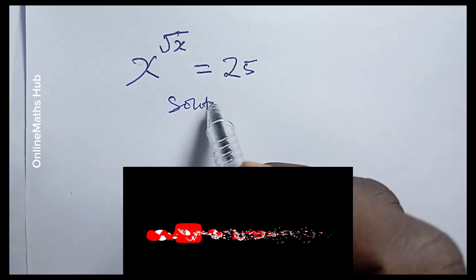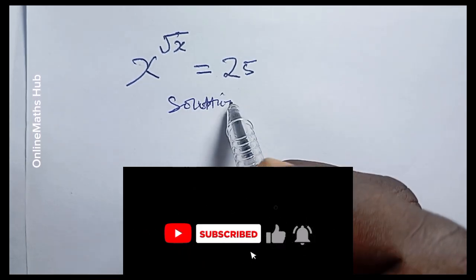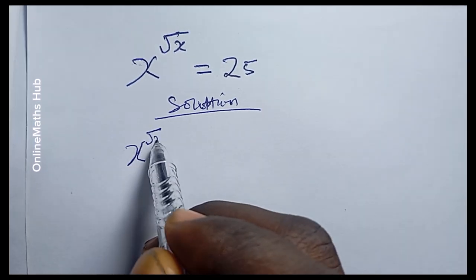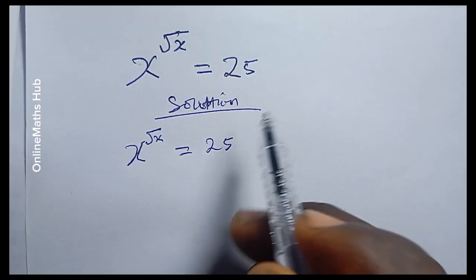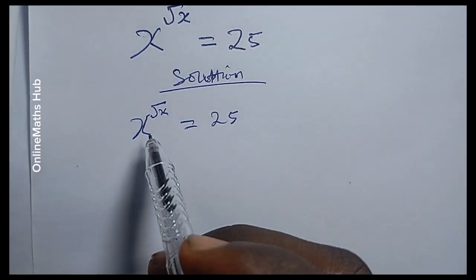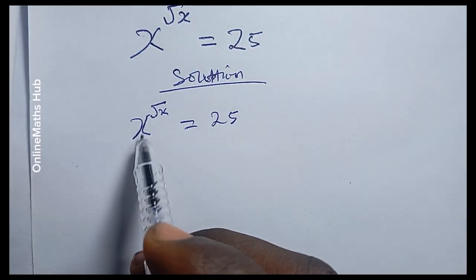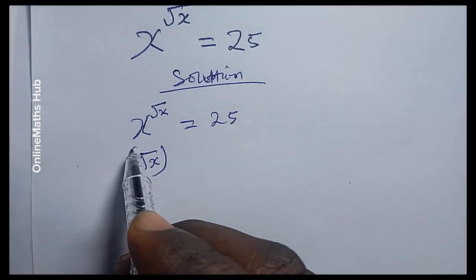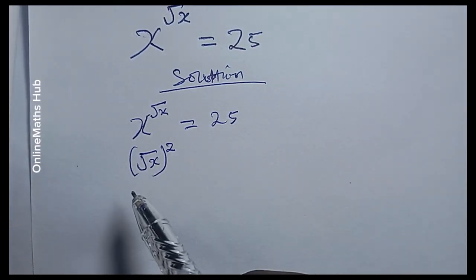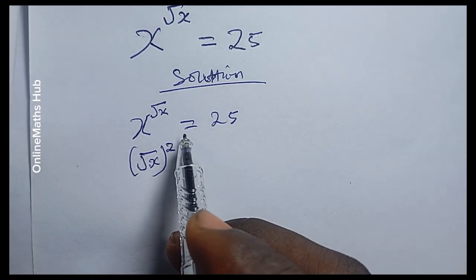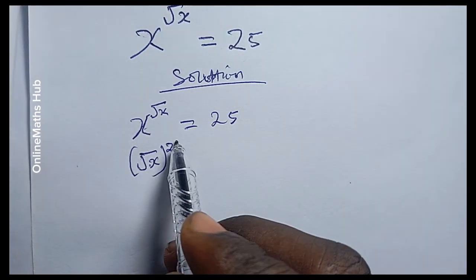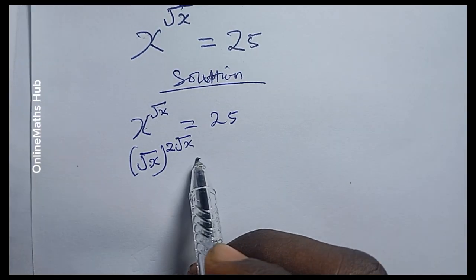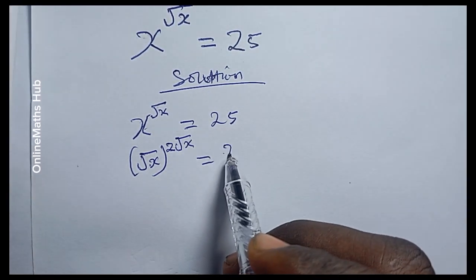Let me write the solution. The question, if I repeat it: this is x to the power root x, equal to 25. What I'm going to do is find a way to rewrite this x right here. I can rewrite it as (root x) raised to the power 2, which is basically the same, because the 2 can cancel this square root and I'll be back to x. I'm going to use this to multiply this root x, so that I have it equal to 25.